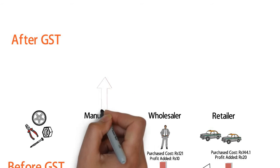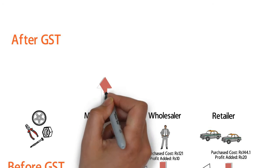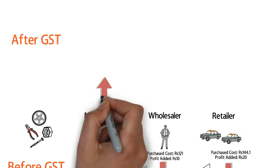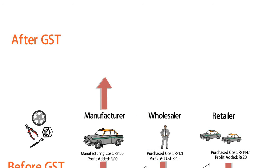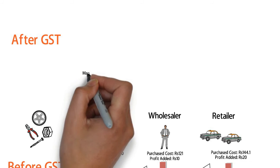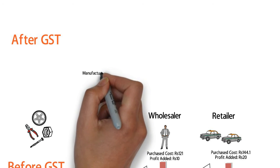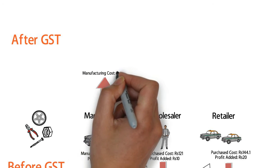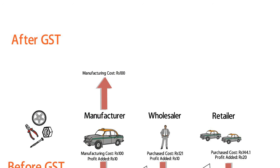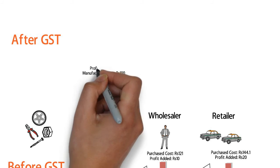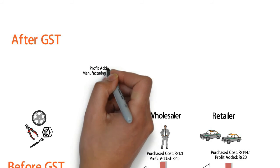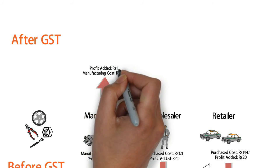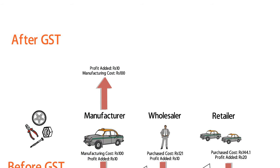So the consumer buys the car at 180.51 rupees. Now let us see how GST will bring down the prices of goods using the same example. A manufacturer buys raw materials for 100 rupees and manufactures a car, then adds value to it with a profit of 10 rupees.